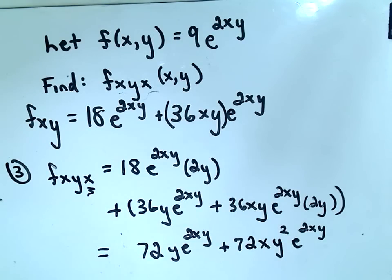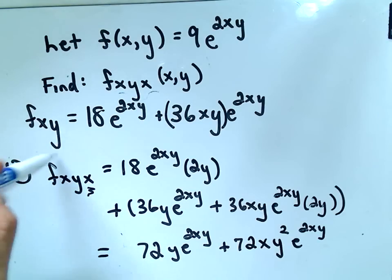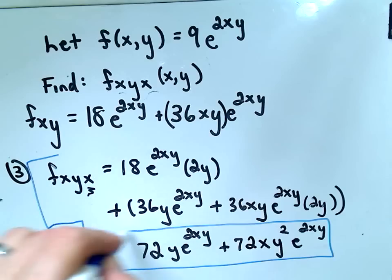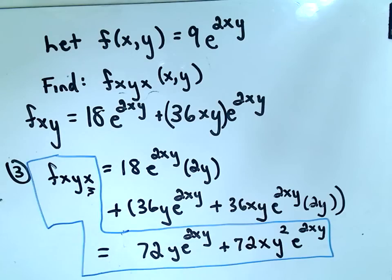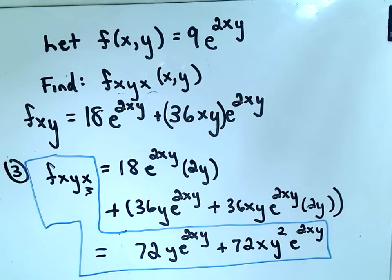At this point I would probably call it a day. You could certainly factor out some stuff — you could pull out the 72, the y, or the e to the 2xy — but if it just said find the third partial derivative, I think that's where I would stop. I hope this example makes some sense. If you have any questions or comments, let me know, and as always feel free to ask questions. Thanks!